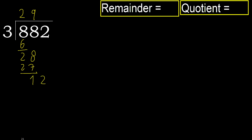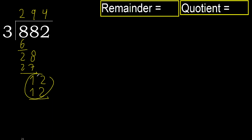3 multiplied by 5 is 15 — 15 is greater. Multiplied by 4 is 12, ok, it's not greater. Subtract, next.